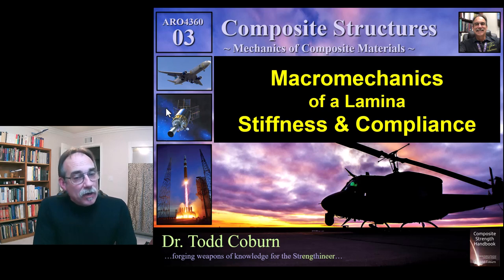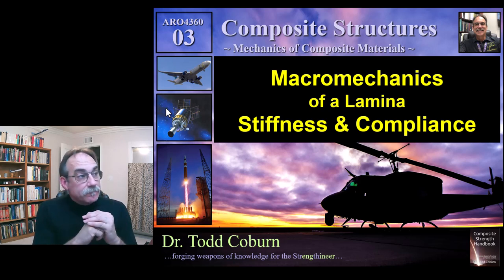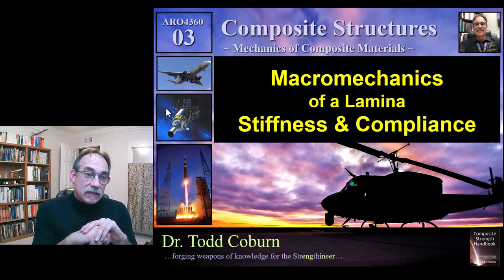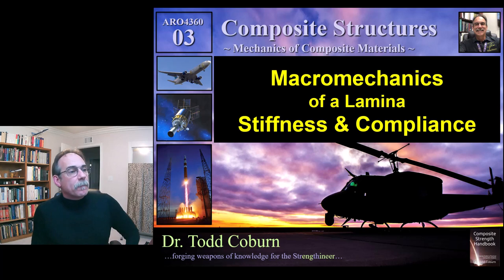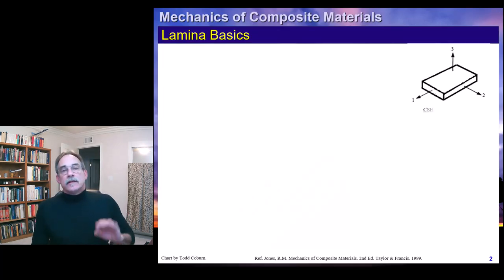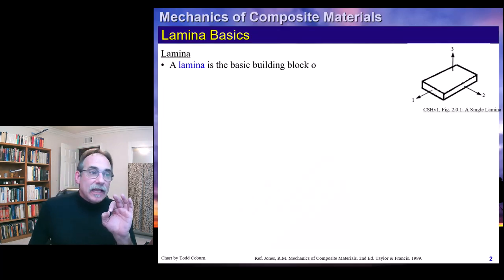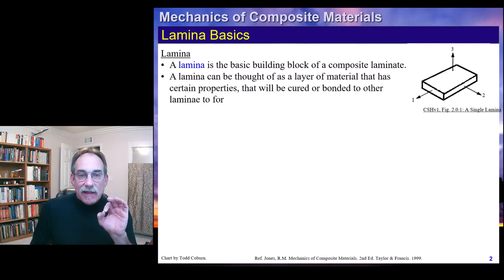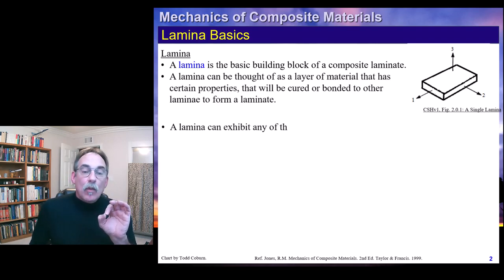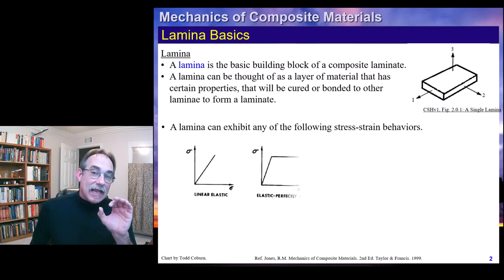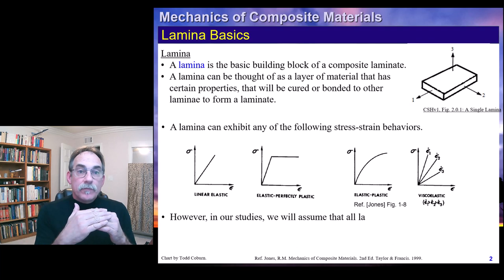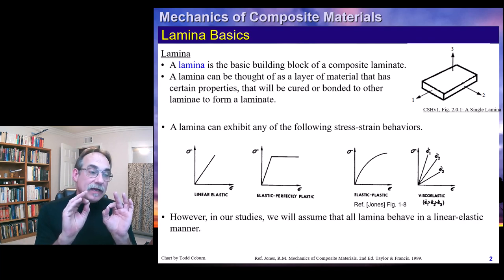Hey folks, Todd Colburn here with your Aerospace Structure Series. This is Lecture 3 for Mechanics and Composites class. We ended our last lecture looking at a lamina — a single layer. Today we're dealing with macro mechanics, which means we just want to know how this thing behaves as a whole, and we're dealing with the laminate itself.